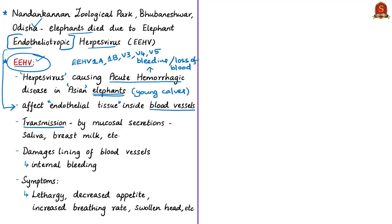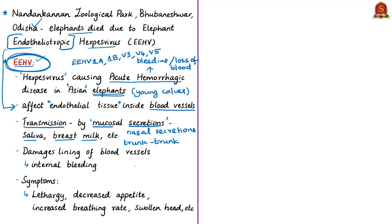Herpes viruses are generally spread by mucosal secretions, which include saliva, breast milk, nasal and vaginal secretions. Available scientific evidence says this Elephant Endotheliotropic Herpes Virus can be found in mucosal secretions of elephants and may be spread by trunk-to-trunk contact. Importantly, this virus affects only elephants and is not infectious to human beings or any other animals.